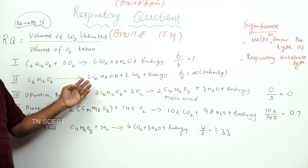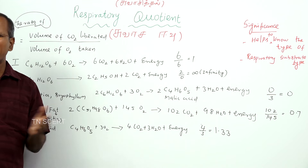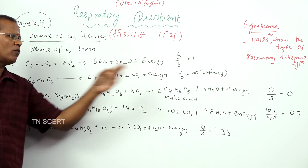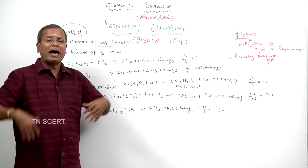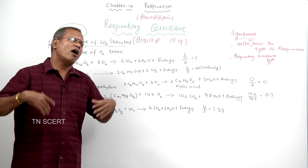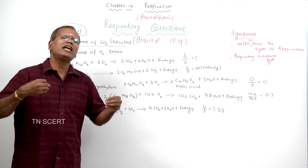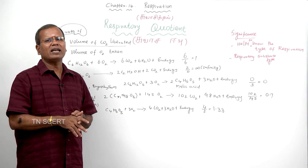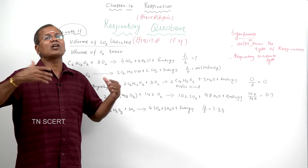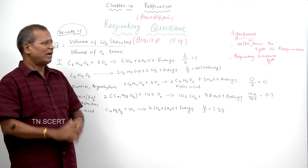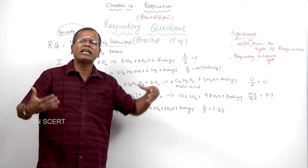C₆H₁₂O₆ gives 2C₂H₅OH (ethyl alcohol) plus 2CO₂ plus energy. In anaerobic respiration or fermentation, no oxygen is consumed and carbon dioxide evolved is 2. So, 2 divided by 0 is equal to infinity.